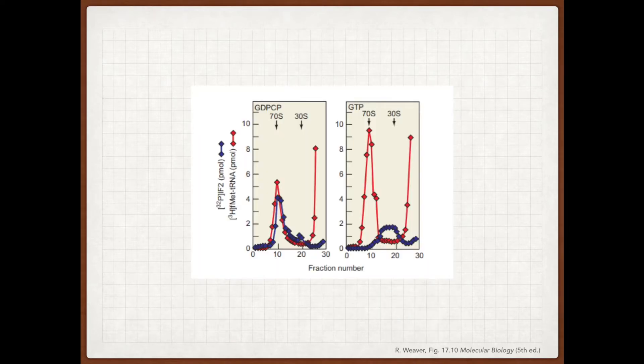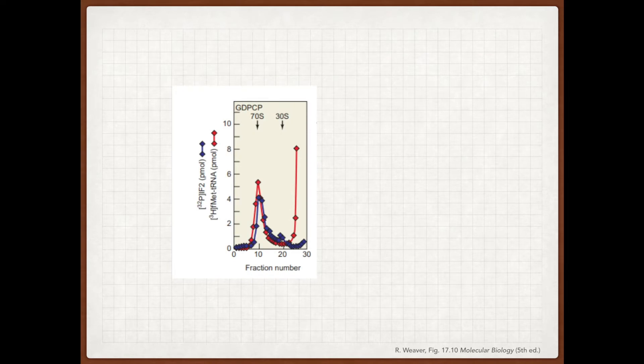So here's the data that the researchers got, and we're just going to take this panel by panel before coming back and synthesizing all the information. So let's start with this panel on the left, which is the GDPCP experiment, or the non-hydrolyzable analog.